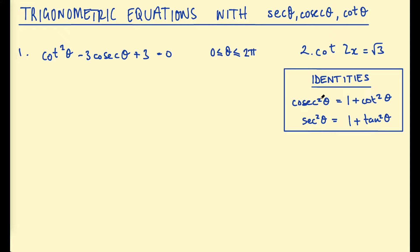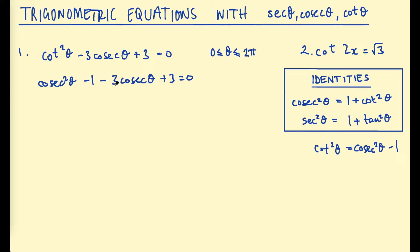Since cosecant squared equals 1 plus cotangent squared, cotangent squared equals cosecant squared minus 1. We substitute that in for cotangent squared and simplify. Now everything is in terms of cosecant. Combining like terms — plus 3 minus 1 gives plus 2 — we get cosecant squared minus 3 cosecant plus 2 equals 0.